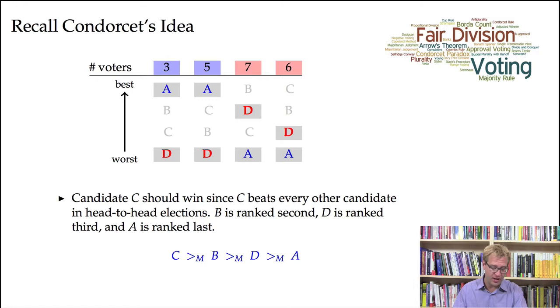And then finally, we just have to ask which of D and A win in a head-to-head election. And we see that 8 people rank A above D, while 13 rank D above A. So the overall ordering is that C comes in first, B comes in second, D comes in third, and A comes in last.